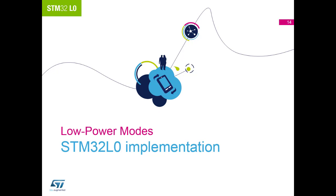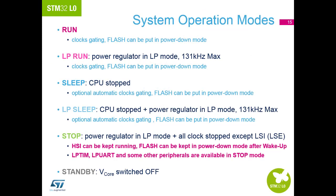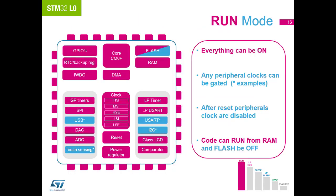Now we have all the information to look at the low power modes of the STM32L0 family. The STM32L0 has five operating modes. Each of the five modes has some flexibility as to what can be enabled or disabled. Run mode is the most flexible mode where everything can be enabled if desired. Each peripheral can be on or off depending on the needs of the application, and code can be executed from either flash or RAM as required.